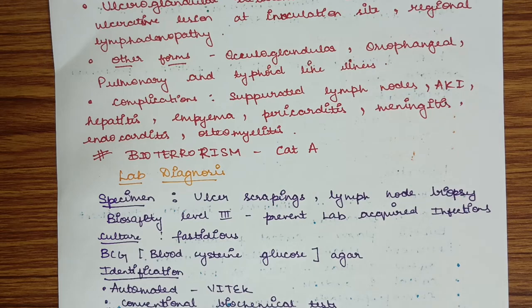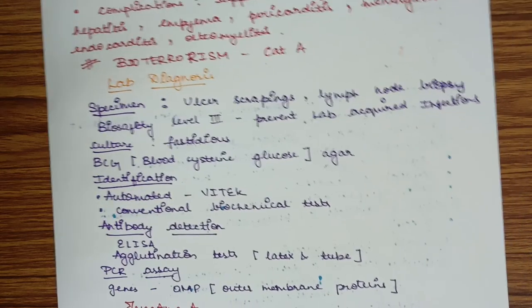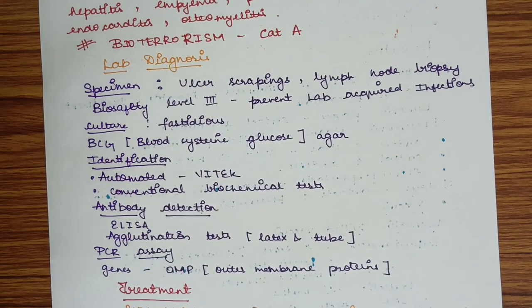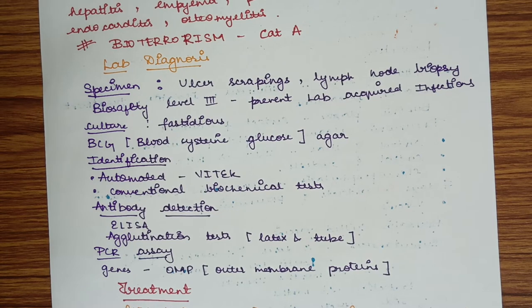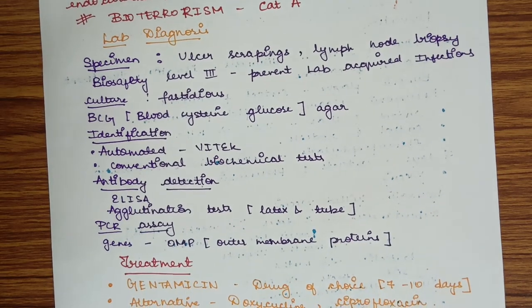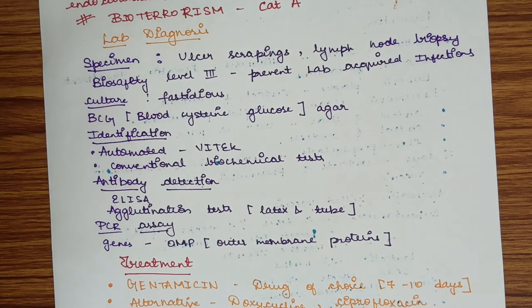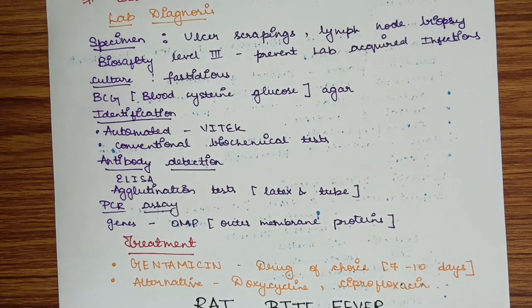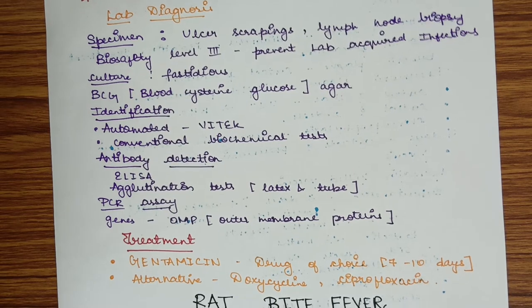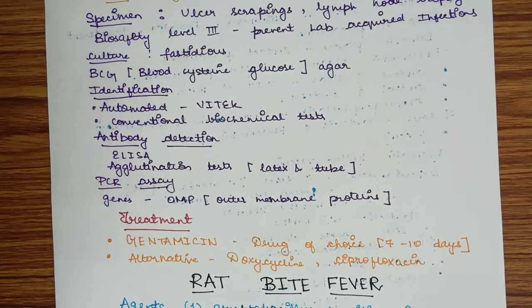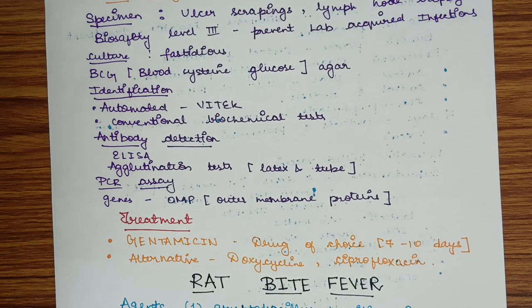Lab diagnosis of tularemia: specimen collected is ulcer scrapings or lymph node biopsy. Biosafety level 3 must be followed to prevent lab acquired infections. Culture: it is a fastidious organism, difficult to grow in normal culture media, so BCG blood cysteine glucose agar is the preferred culture media. Identification either by automated methods like Vitex or by biochemical tests. Antibody detection by ELISA or agglutination tests such as latex and tube agglutination. PCR assay detects OMP genes, the outer membrane protein genes.